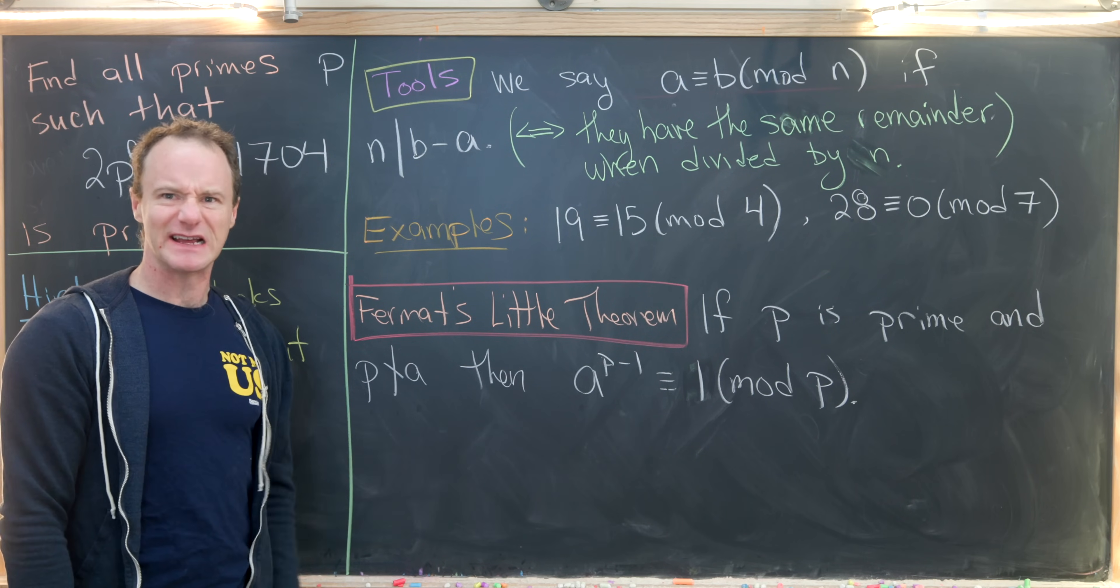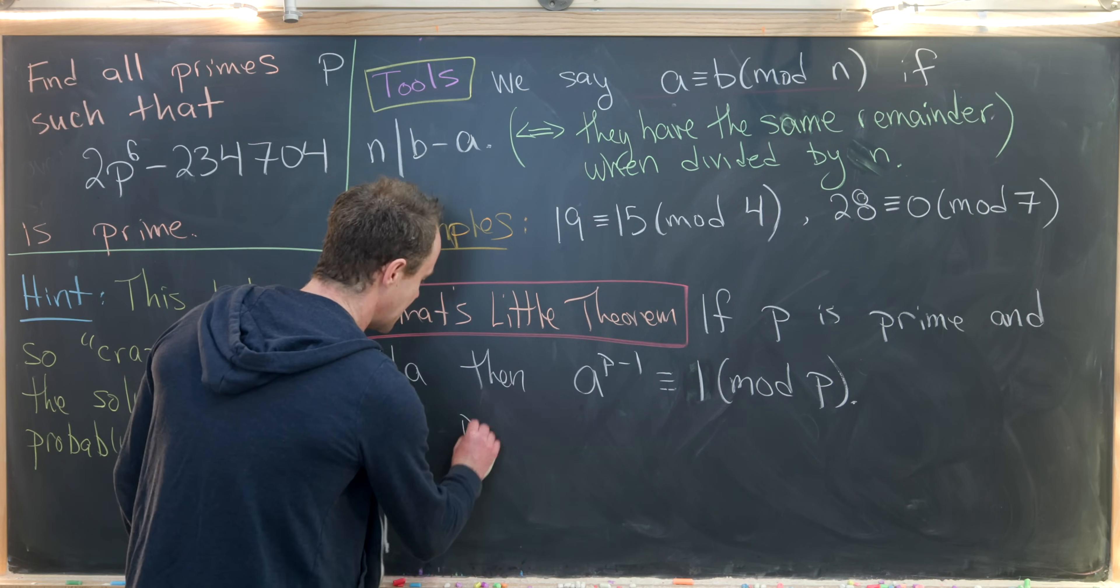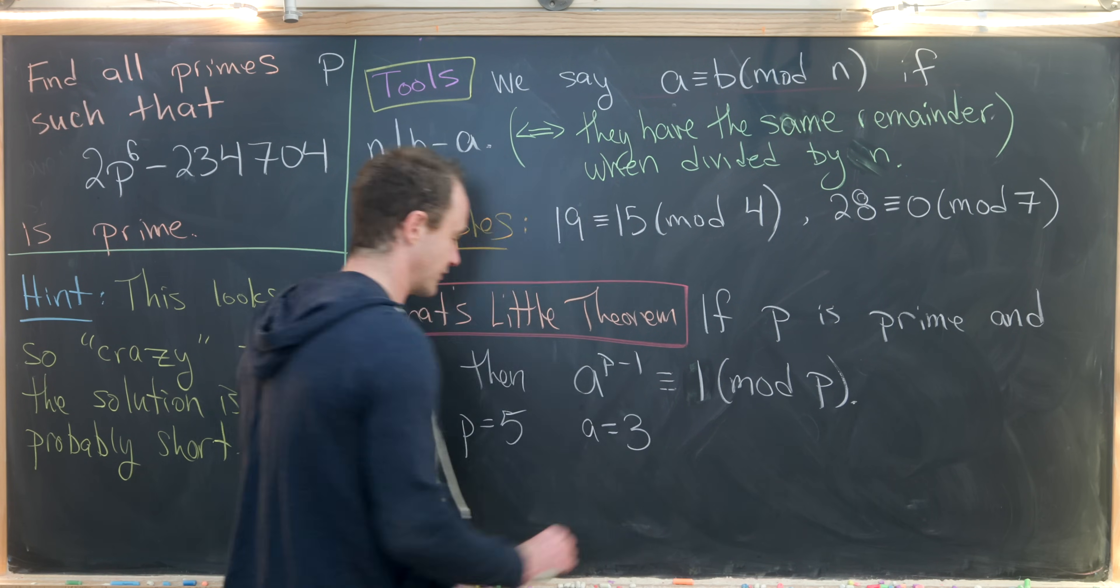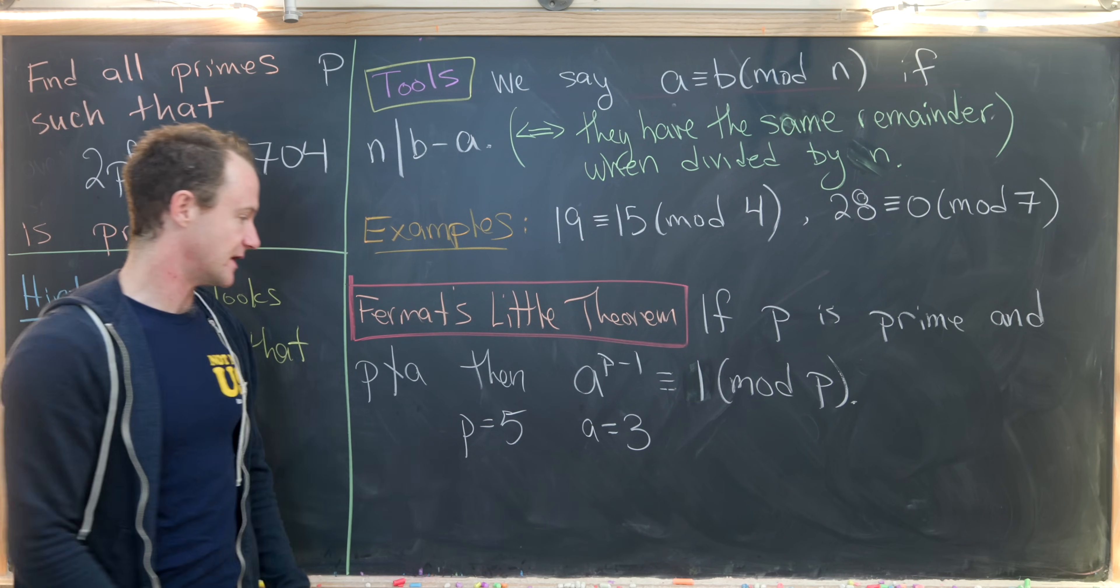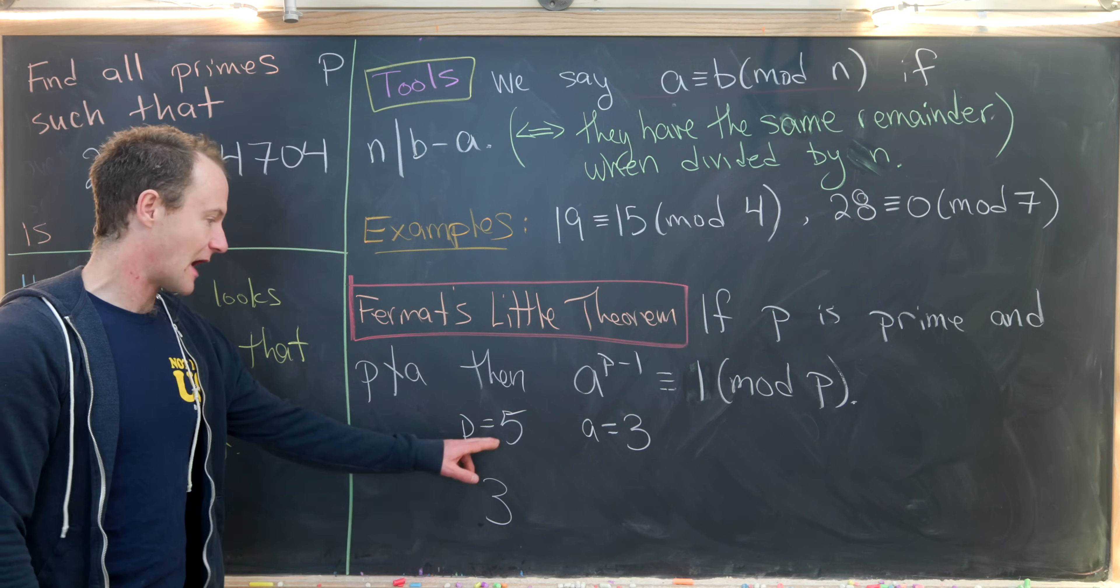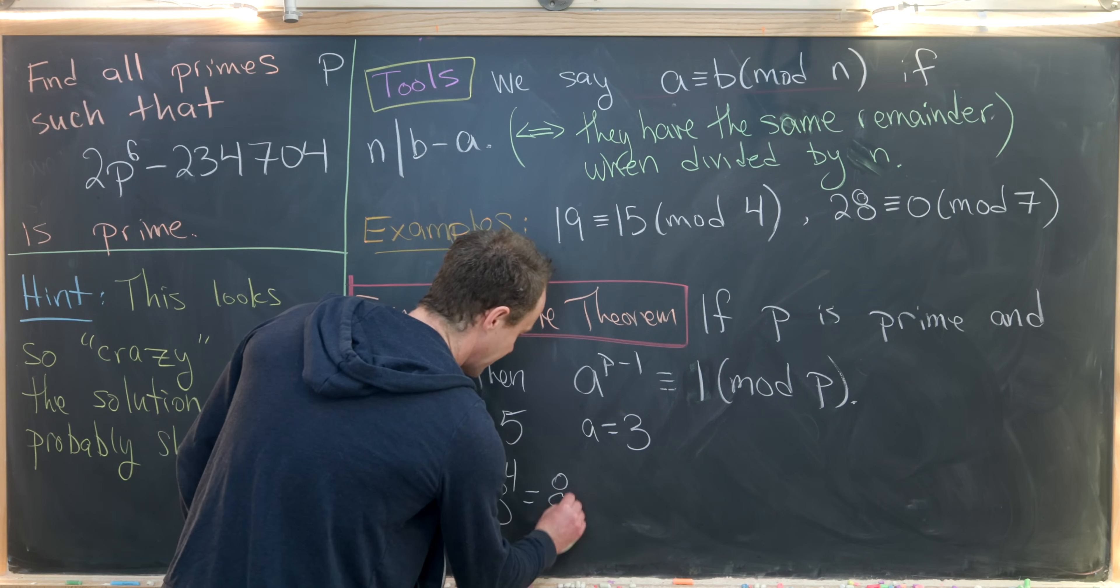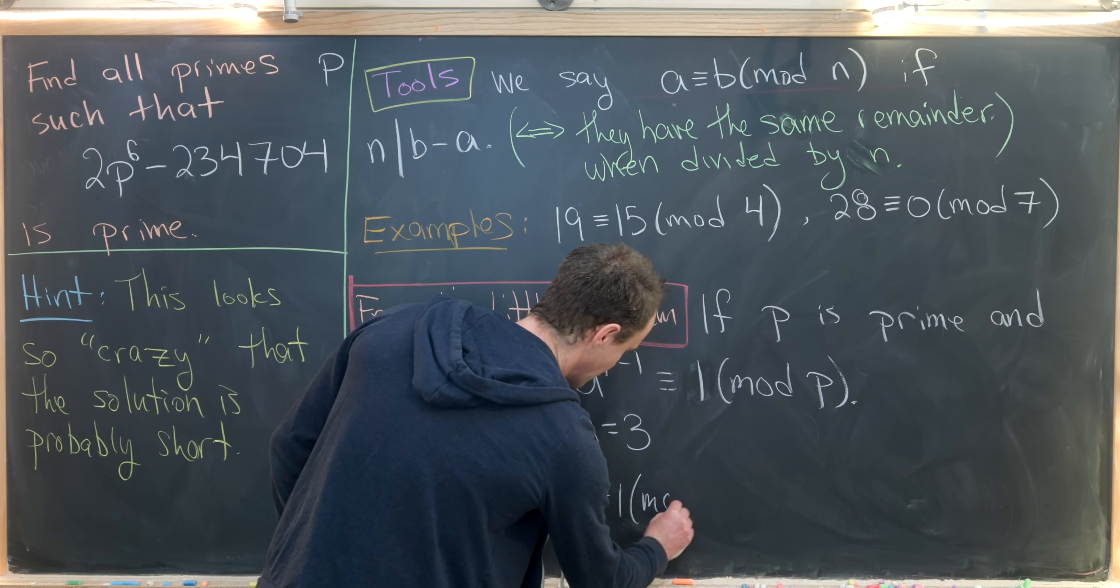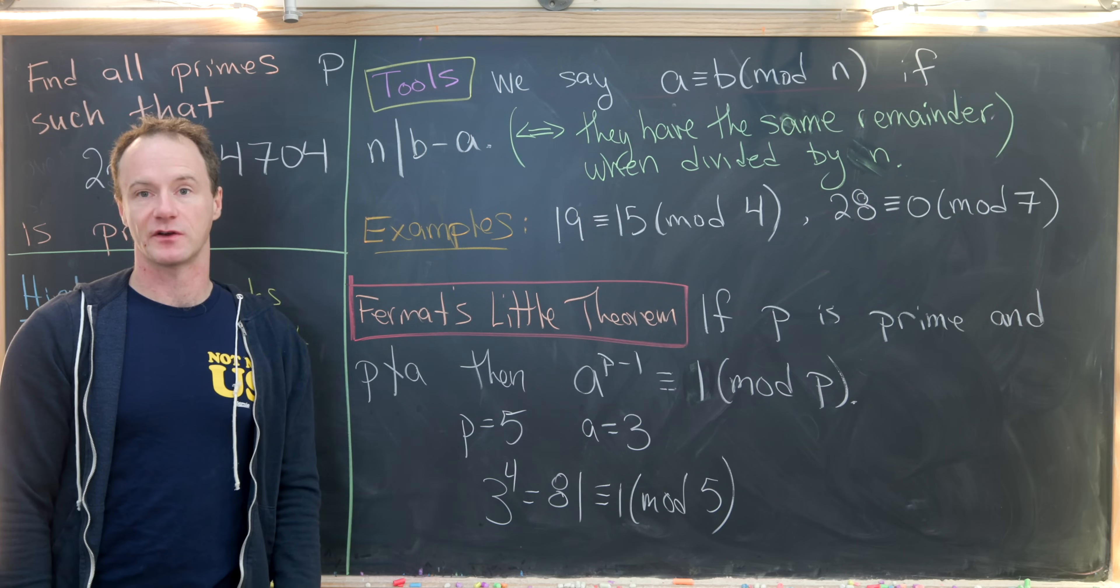So let's look at an example of that real quick. Let's say p is equal to 5 and a is equal to 3. I think we can all decide that 5 does not divide 3. Now let's look at 3 to the power of 5 minus 1. Well, that's 3 to the 4. You can calculate that to be 81. But notice that 81 is congruent to 1 mod 5. So there's an example of Fermat's Little Theorem in action.